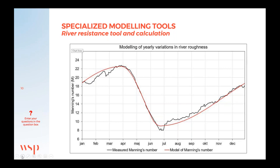This slide shows a graph representing the yearly variations in river resistance, in this case represented through the Manning's number. Without getting too technical, this parameter is often notoriously difficult to determine correctly. Therefore, we've created automated ways of calculating this parameter from measured flow and water level data in the stream, shown in a black line. From this automated calculation we can generate a seasonal model describing the river resistance, shown in red.